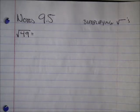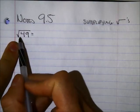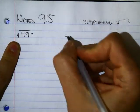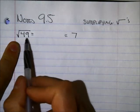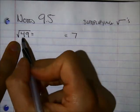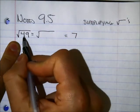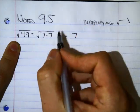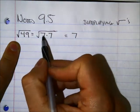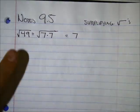This is section 9.5 where we simplify square roots. Right now you can do square roots like this: the square root of 49 is 7. I want you to start thinking of these in another way too. The 49, if I break that up into pieces, 49 is 7 times 7, or 7 squared. And the square root of 7 squared is just 7.